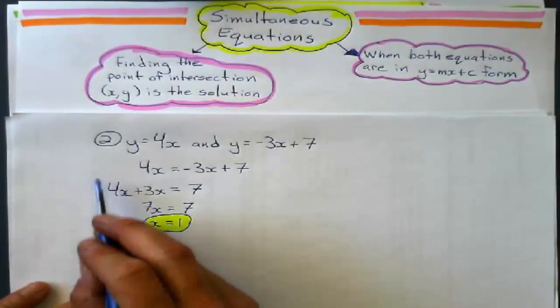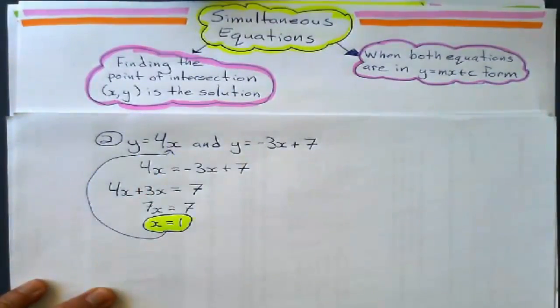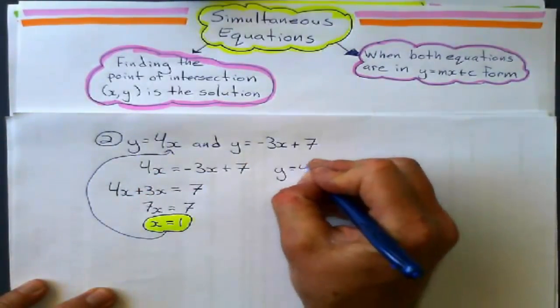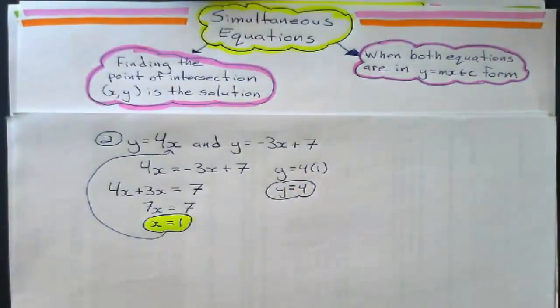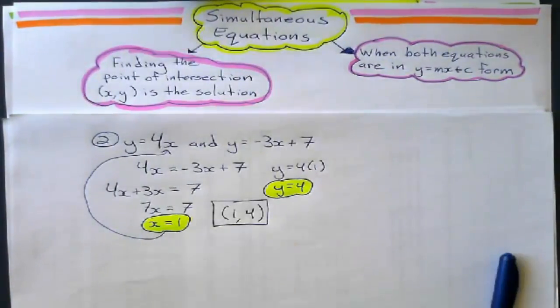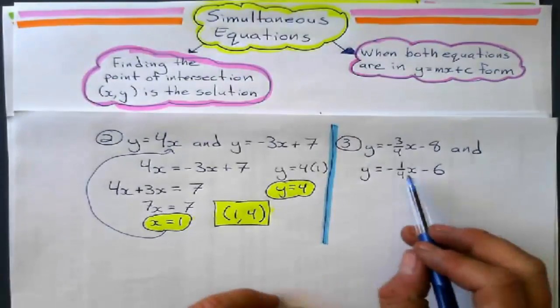Now, I'm going to take that 1, and I think I'll substitute it into the first equation right there. That's a bit easier. So, y equals 4 times 1, which is 4. Okay. So, my point of intersection for those two lines is 1, 4.